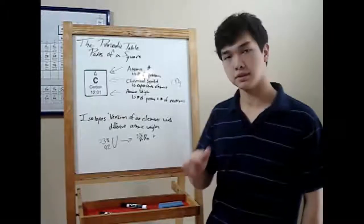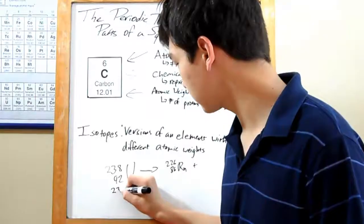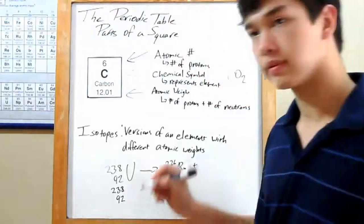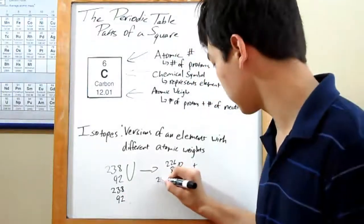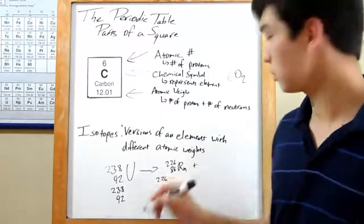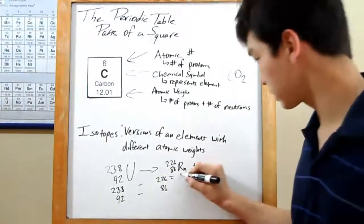In nuclear chemistry, all you have to do is make sure your numbers are the same on both sides. We have a total atomic weight on this side of 238 and a total atomic number of 92. Over on this side, we already have 226 for atomic weight and 86 for atomic number. Well, we subtract this from here to find out what we've got left over.